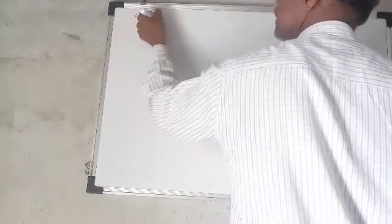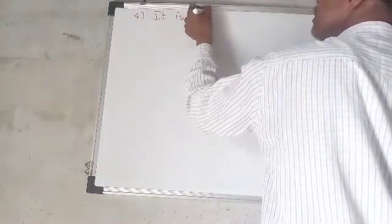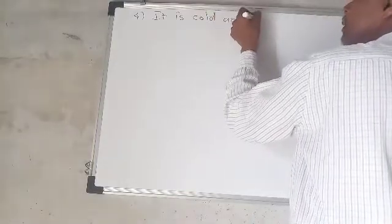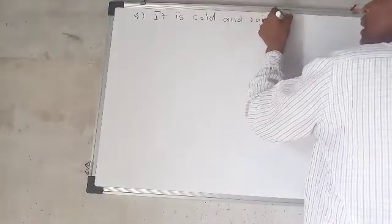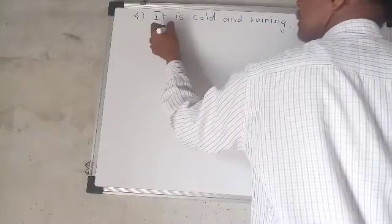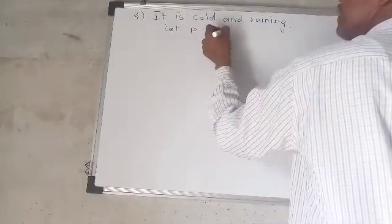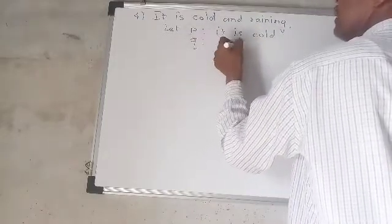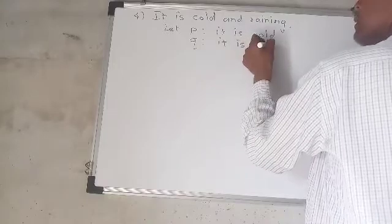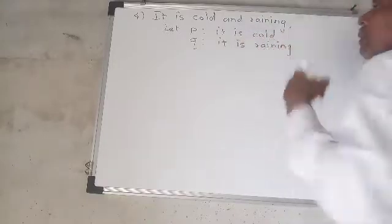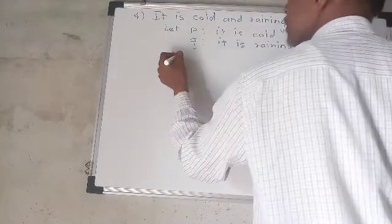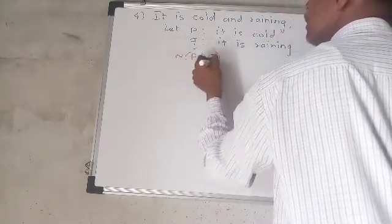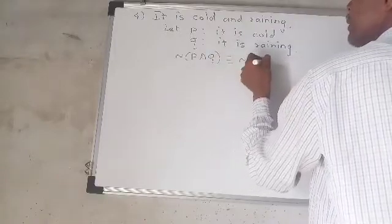Next: it is cold and rainy. There are two parts: P — it is cold, Q — it is rainy. Negation of P conjunction Q is logically equivalent with negation P disjunction negation Q.